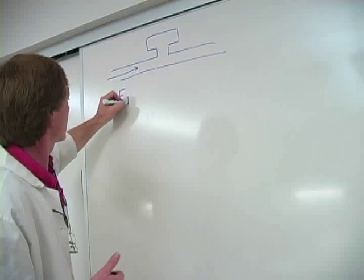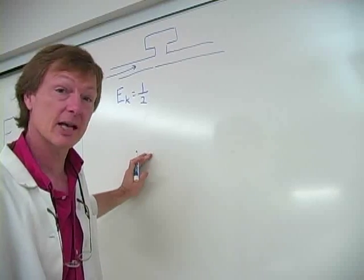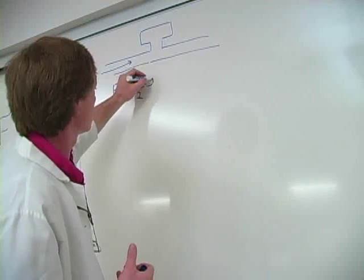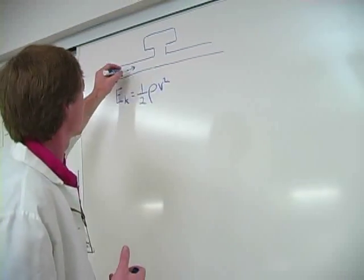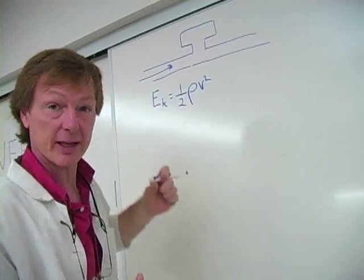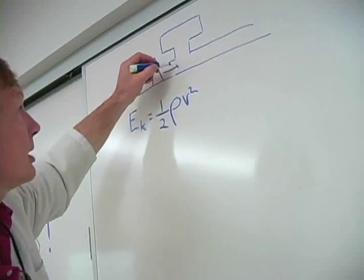And so instead of one half mass times velocity squared, I'll have one half mass density times the velocity squared. So as the flow comes in here, I might have like a surge of kinetic energy density.